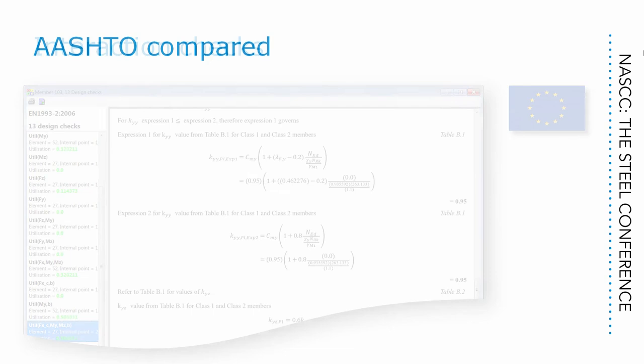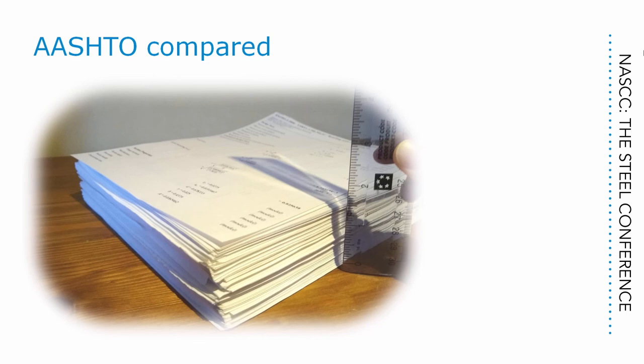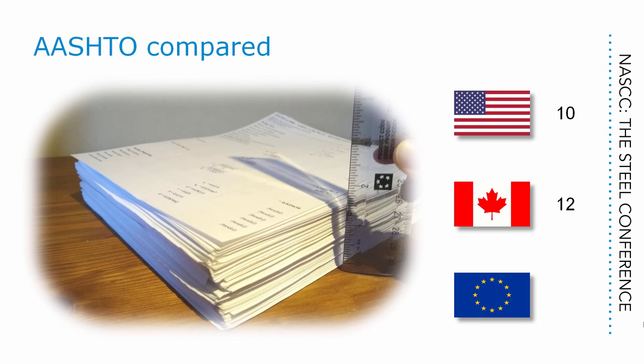It's not a very scientific slide because it's going to vary a lot from structure to structure, but the calculations are set up in the same sort of format, so we can get an idea of the relative effort. If we take the shortest calculations as our benchmark — that's AASHTO — for every 10 pages of AASHTO calcs, we had 12 pages of calcs to the Canadian code and 31 pages of Eurocode calcs. So the Eurocode did seem, in this case, to represent considerably more calculation effort.